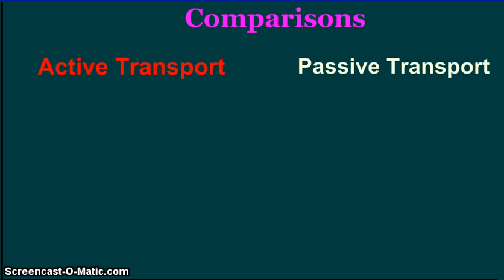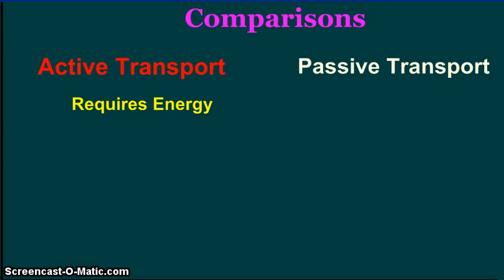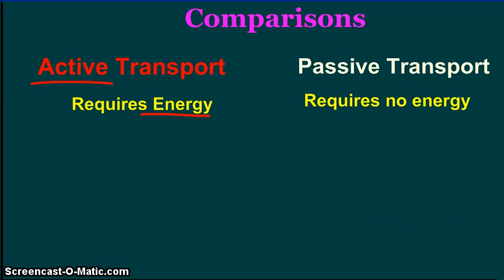Active and passive transport are different in one critical way. Active transport requires energy. This makes sense — we see the word active and energy. Passive transport, then, requires — I hope you guessed — no energy. Passive transport happens on its own and does not require any extra energy from the cell.